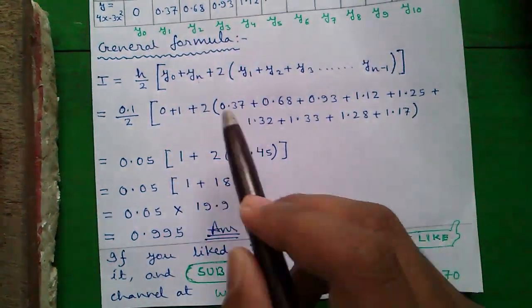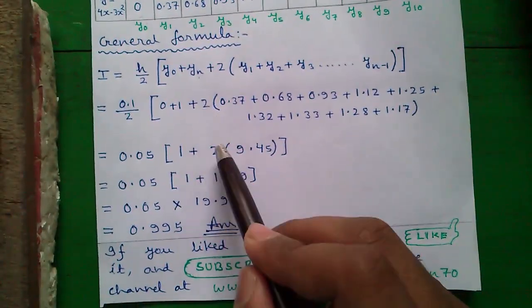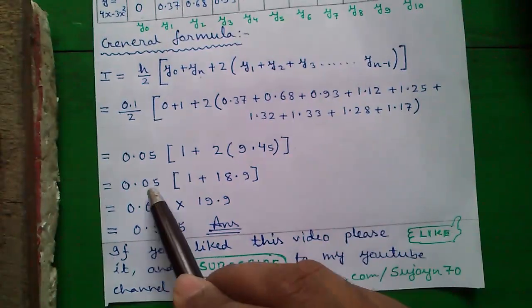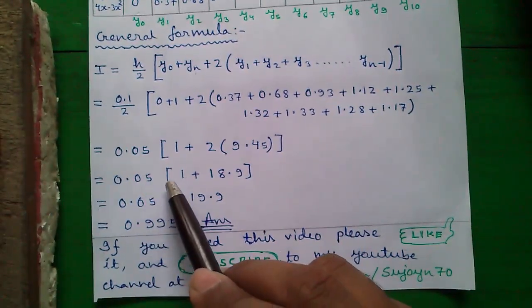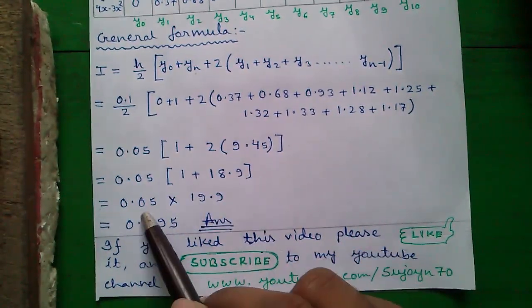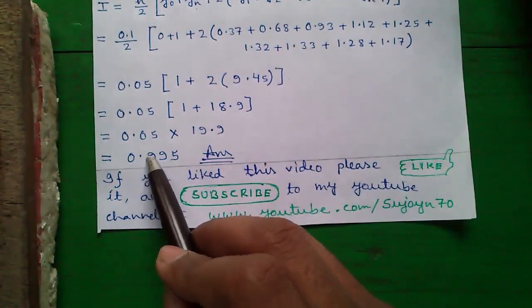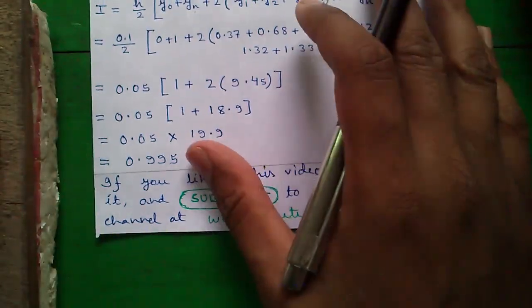And rest is simple calculation, 0 plus 1, 1 plus 2 into rest of the values becomes 9.45. That becomes 0.05 plus 1 into 18.9, that is 0.05 into 19.9. Ultimately, the answer is 0.995, very easy, isn't it?